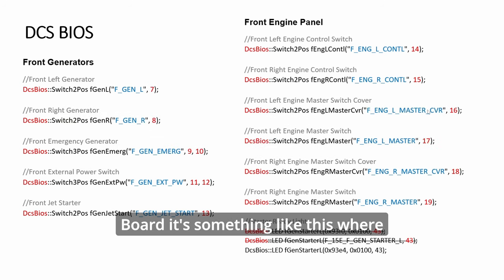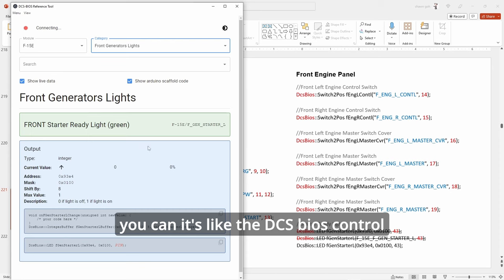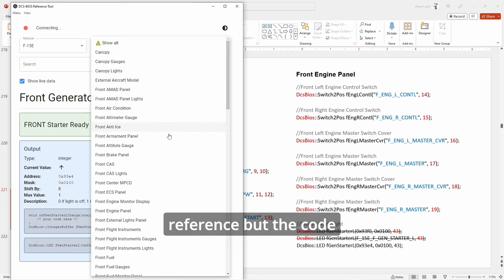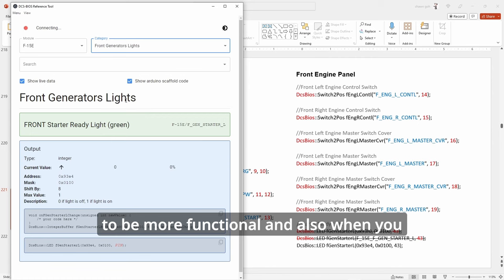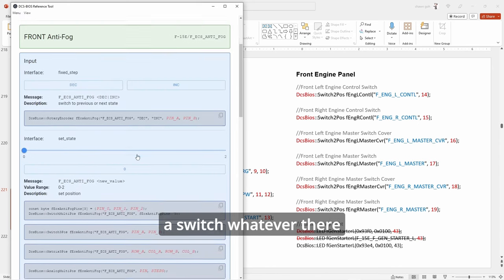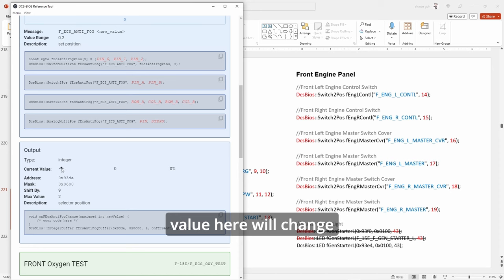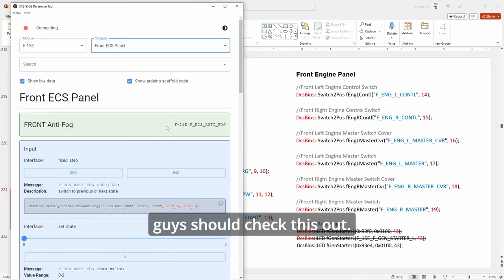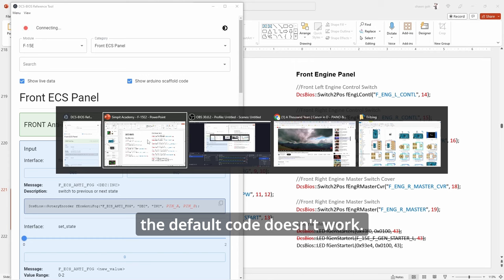So what is board? Board is something like this where it's like the DCS BIOS control reference but the code especially for LED lights tend to be more functional. And also when you pick something there is a switch whatever there is an output and if you in the game mouse click something the value here will change okay for toggles for rotaries whatever. So you guys should check this out. It's another point of reference should the default code doesn't work.